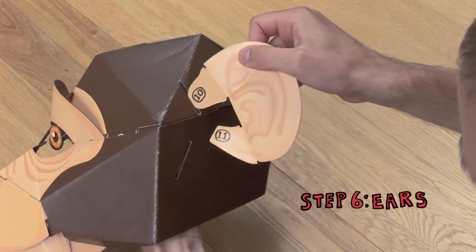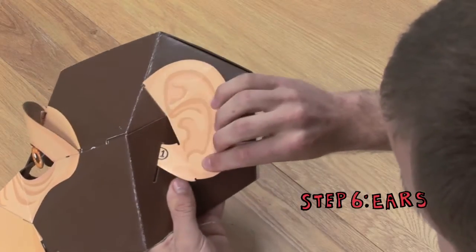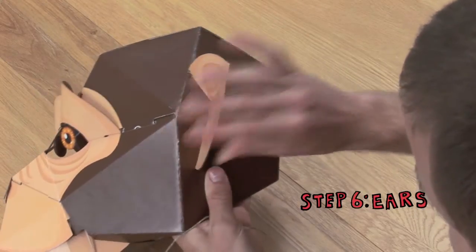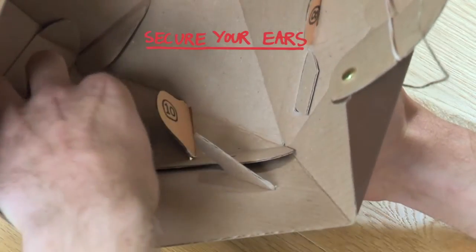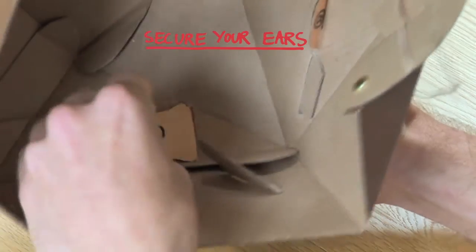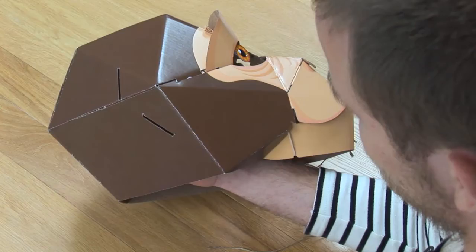Take one of the ears, and push tab 10 through the higher slot in the side of the head. Push tab 11 through the lower slot in the side of the head. Inside the mask, secure tabs 10 and 11 by tucking them behind the tabs with the holes in them. Then repeat for the other side.